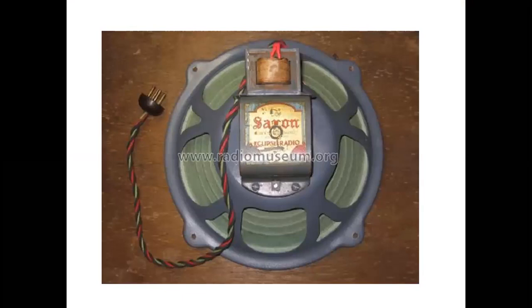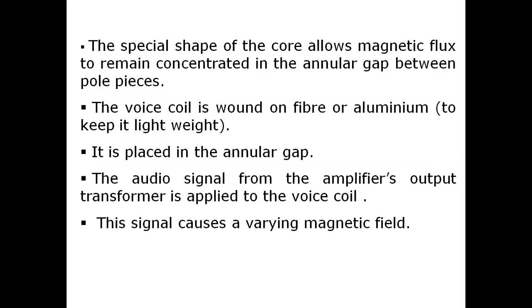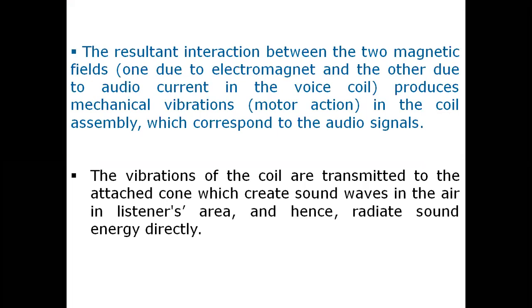यह diagram है electrodynamic loudspeaker का जो real life में use होता है। जैसे मैंने बताया — special shape of core allows magnetic flux to remain concentrated in the annular gap between pole pieces. Voice coil is wound on fiber or aluminium and placed in the annular gap. Audio signal from the amplifier's output is applied to the voice coil, and the signal causes a varying magnetic field.